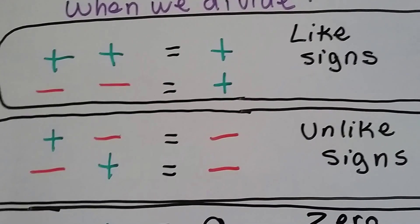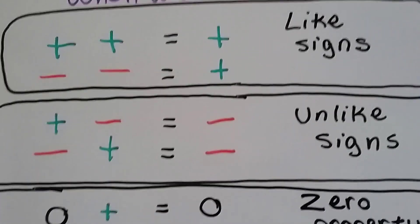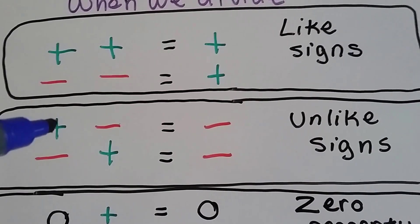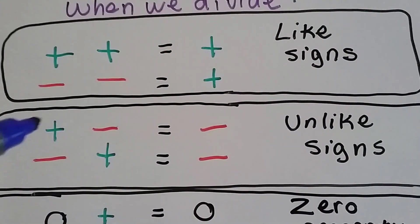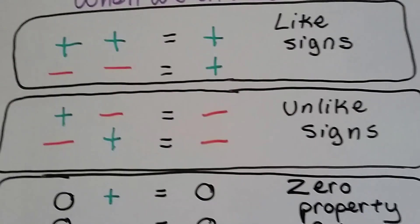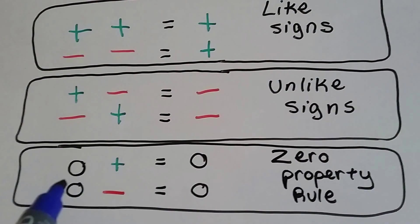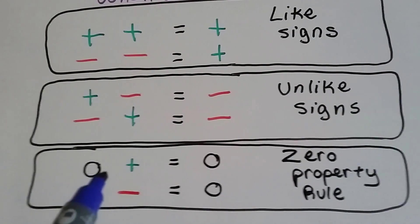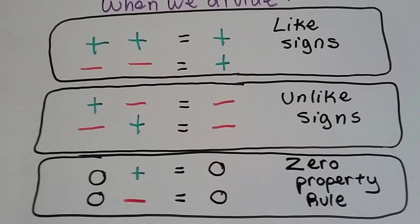And when the signs are unlike, we're going to have a negative for a quotient. If we divide a positive by a negative, or a negative by a positive, because they're unlike, we're going to have a negative answer. And the zero property rule stands just as in multiplication — if we have zero and we divide it by a negative or positive number, it's still going to be zero.